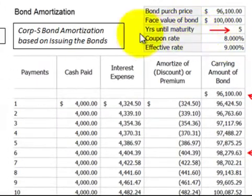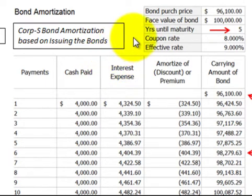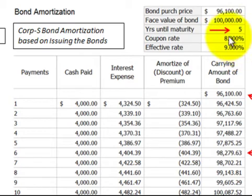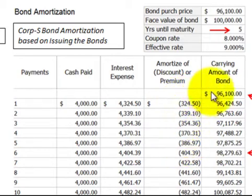The first thing we have to do is set up a bond amortization schedule for when Corporation S issued the bonds, and then also set one up for Corporation P when they bought back the bonds. Looking at Corporation S's bond amortization schedule, they issued them at a discount with five years to maturity. We compute the bond rate versus the effective rate and get a schedule for payments, interest expense, amortization of the discount, and the carrying value of the bond.